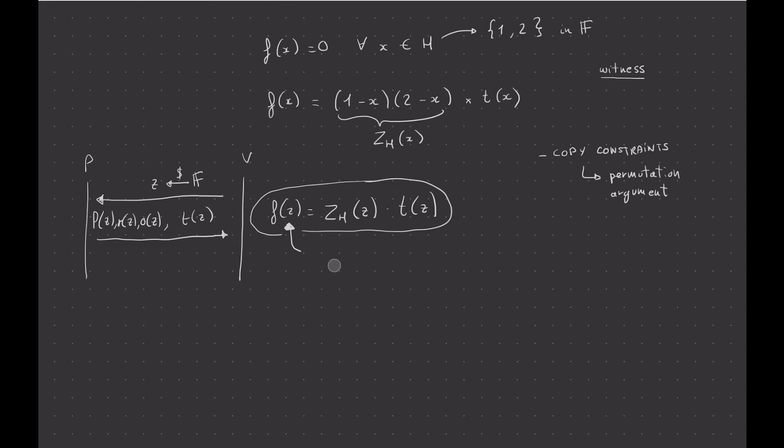we'll check l zeta, ql zeta, you know, as the verifier, plus r zeta, qr zeta, plus o zeta, qo zeta, plus qc zeta, plus l zeta, r zeta, qm zeta. And we check that this is equal to 0.